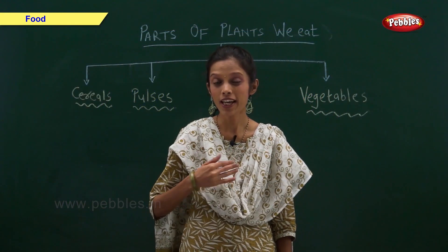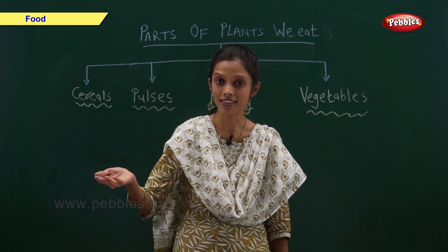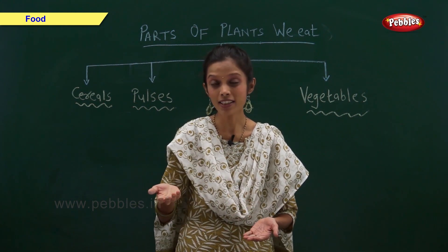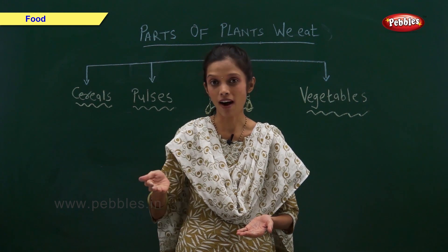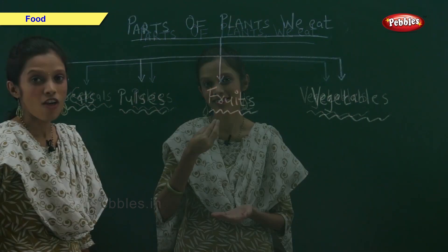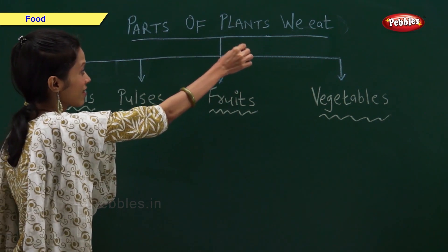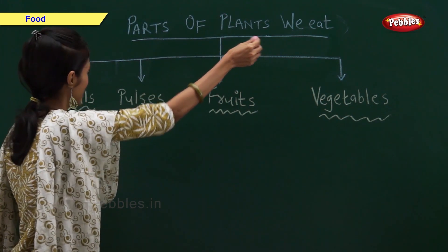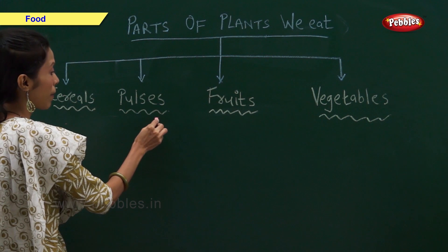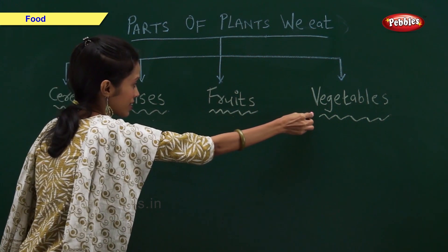We get many kinds of food from plants. We eat plants or a part of plants as food. Now, let us look at the parts of plant that we eat. We eat cereals, pulses, fruits and vegetables.